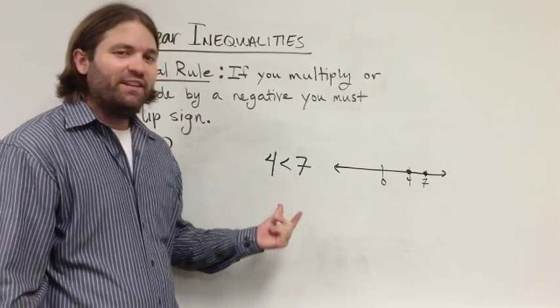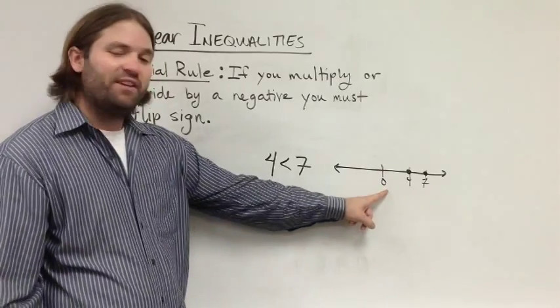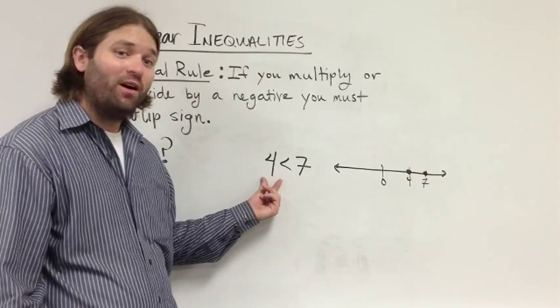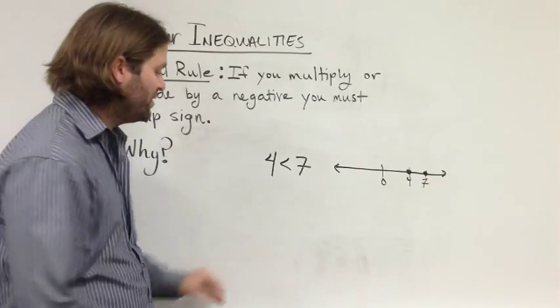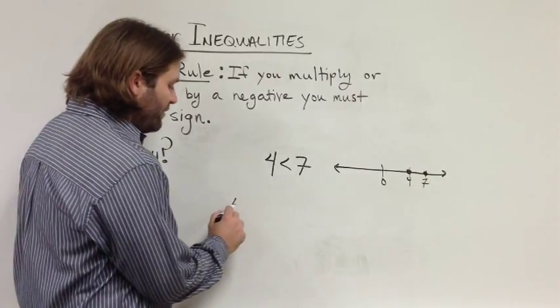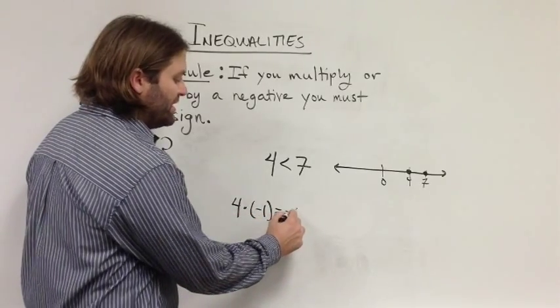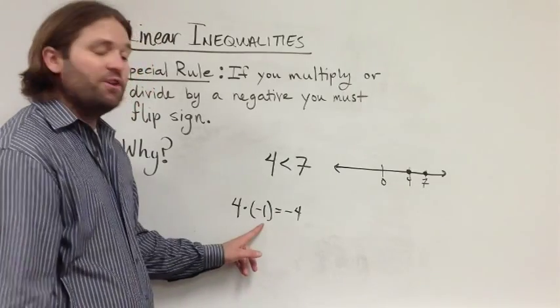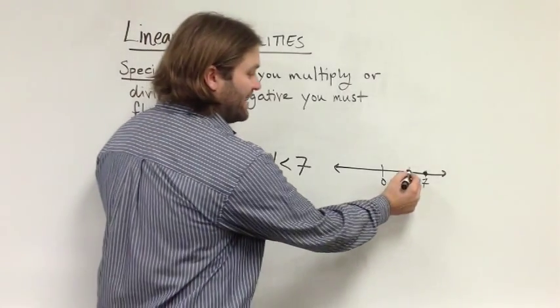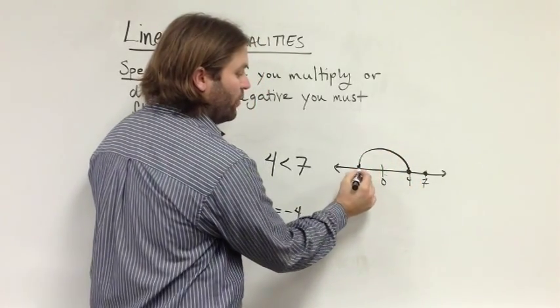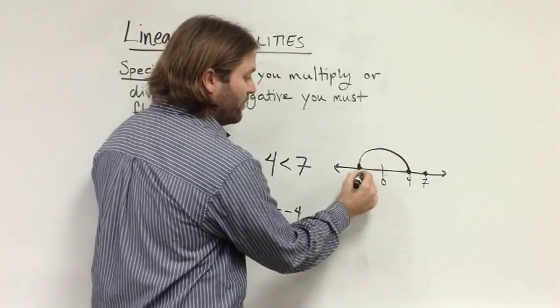The question is, what happens on the number line when we multiply these numbers by negative 1, a negative number? Well, if you take 4 and multiply it by negative 1, of course this becomes negative 4. You can imagine that by simply taking the number, that is the distance from 0, and flipping it across. So, 4 becomes negative 4.